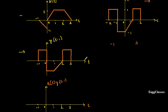At t = minus 1, the value of x(t) is 0. At t = minus 1, the value of y(t-1) I can take as 1. So 1 times 0 gives me 0 — this is the point I get at t = minus 1.